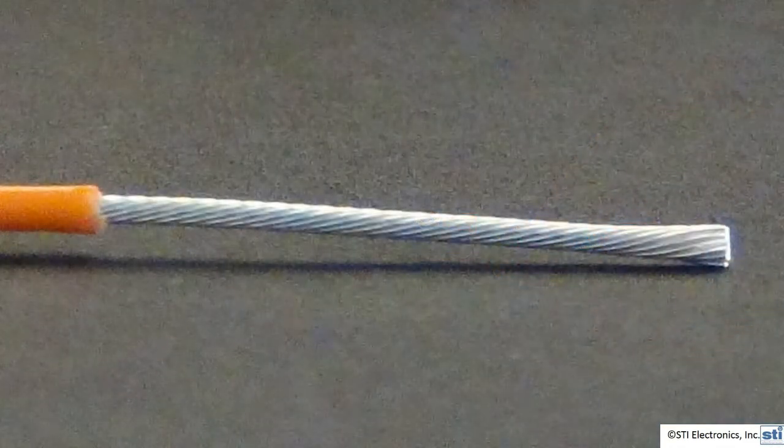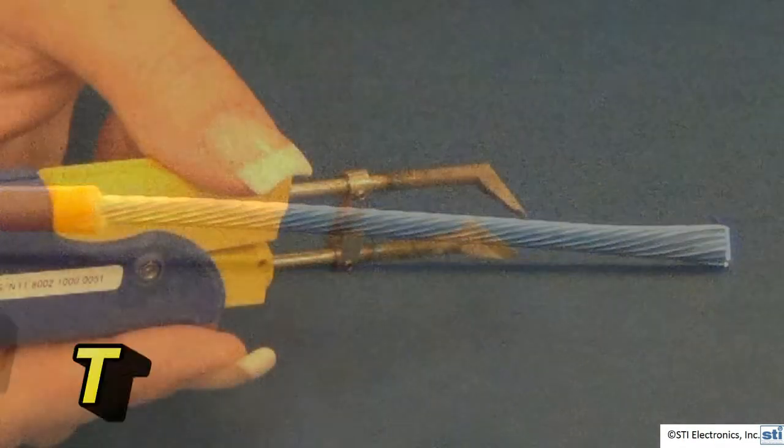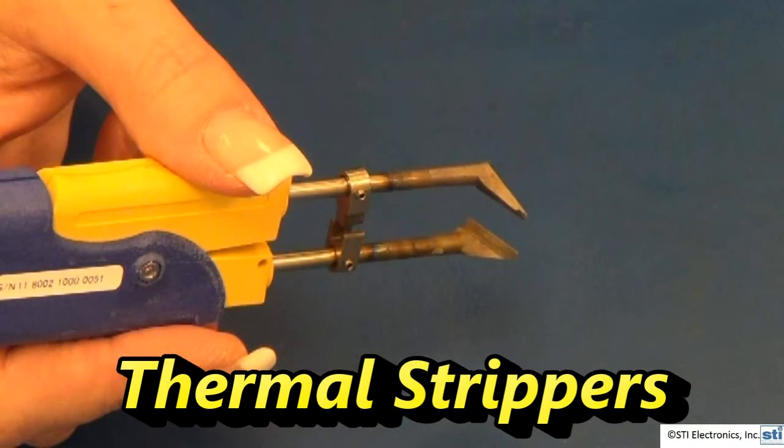Here we can see that the wire has had the insulation stripped off of it, and this is acceptable. Now, we'll demonstrate thermal strippers.